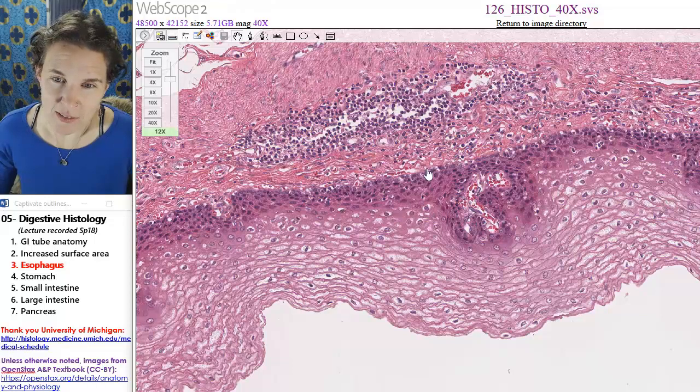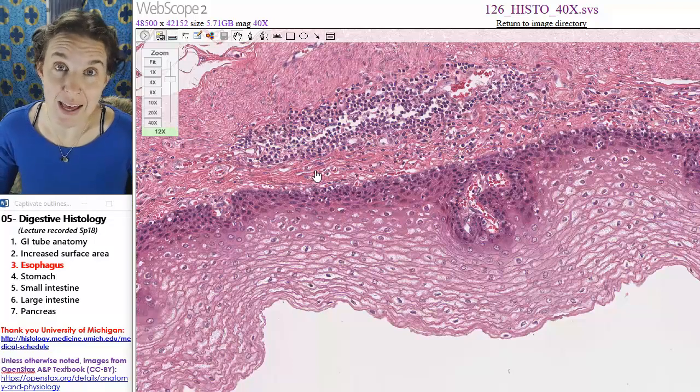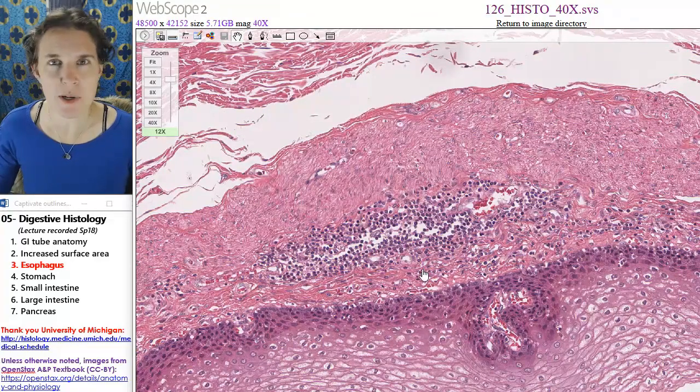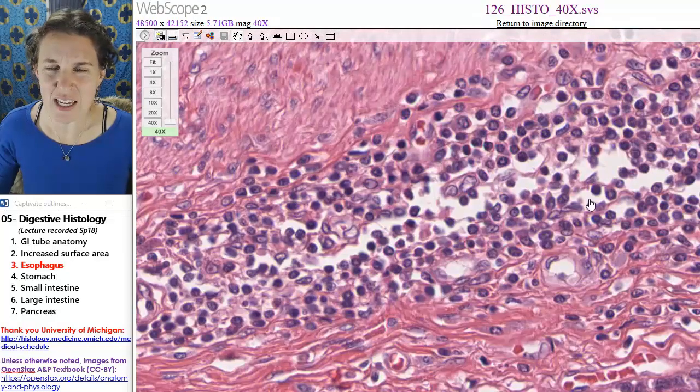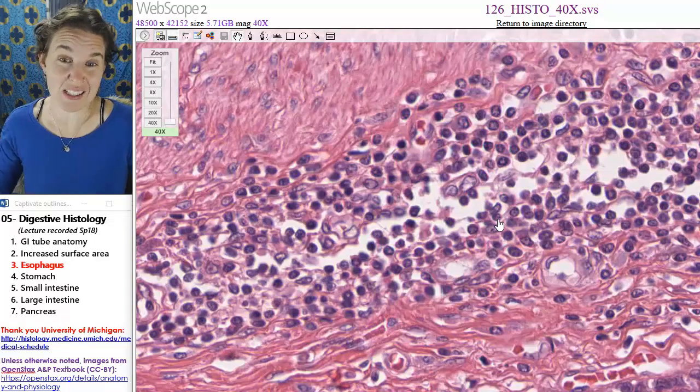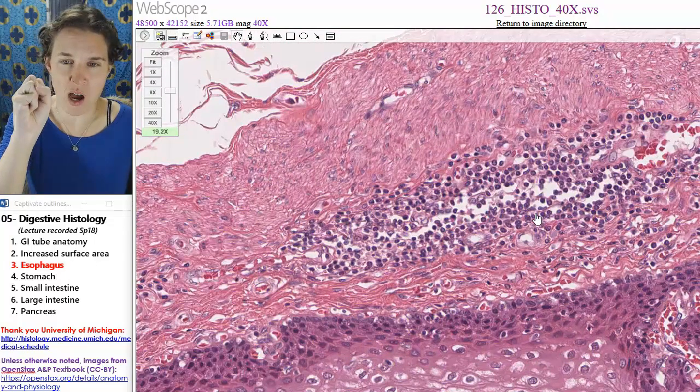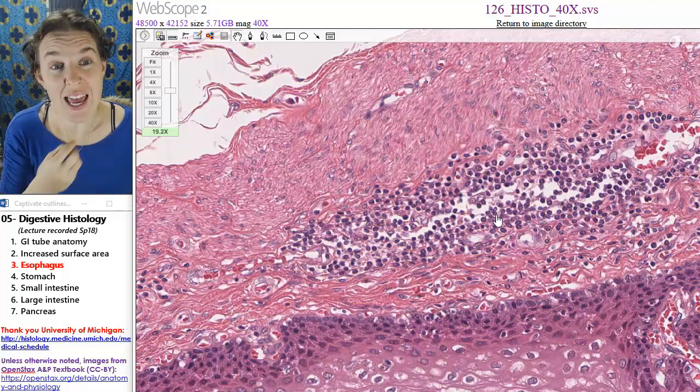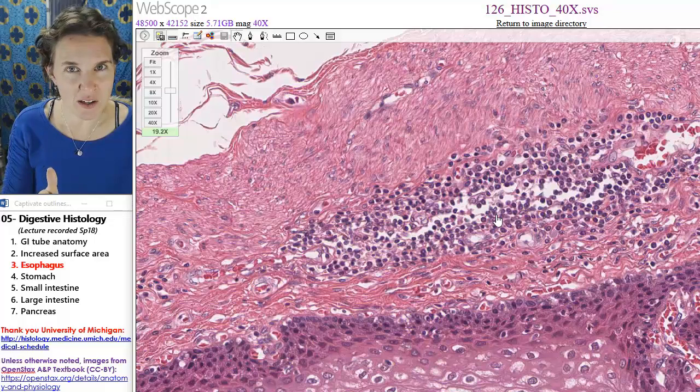This would be my basement membrane, which means what is going to be basal to that? We should see the submucosa and the lamina propria. And it's true. This is an interesting structure right here. This is actually a lymphatic nodule and it's a little bit different structurally from a lymph node, but it has a lot of similarities. It's a little less structured than a lymph node. Most of your digestive tract has these lymphatic nodules in it because the lymphocytes hang out there.